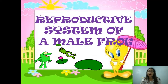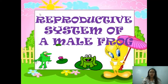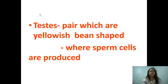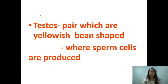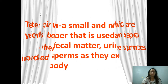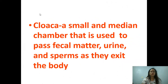Now moving on to the reproductive system of a male frog. The testes are yellowish and bean-shaped, and they are where sperm cells are produced. The cloaca is a small chamber that is used to pass fecal matter and sperm as they exit the body of the frog.